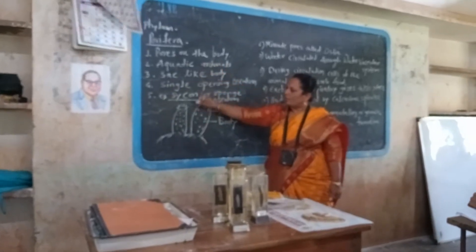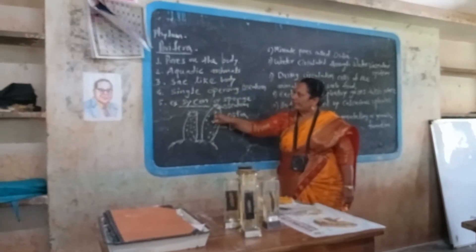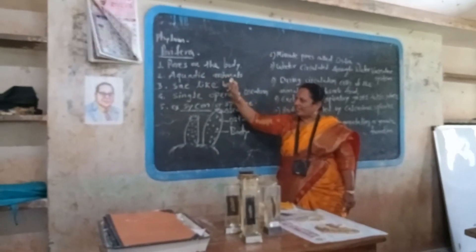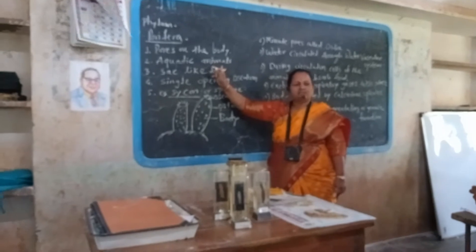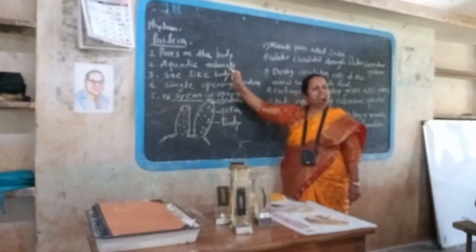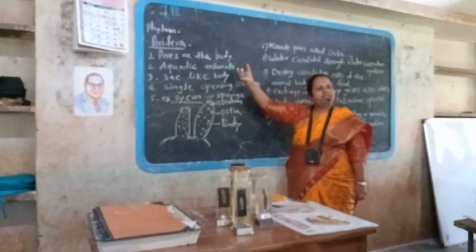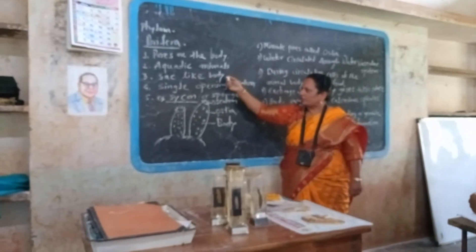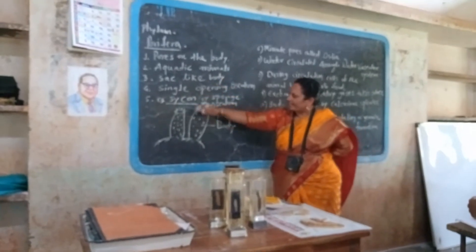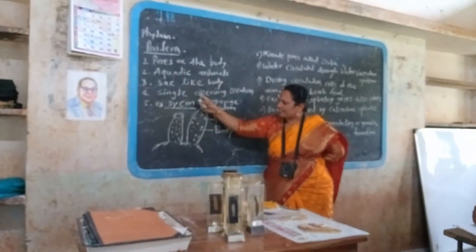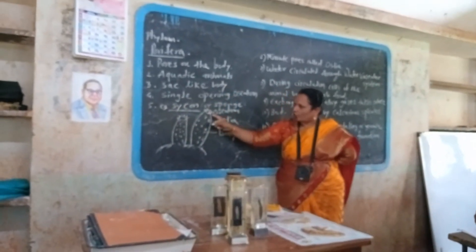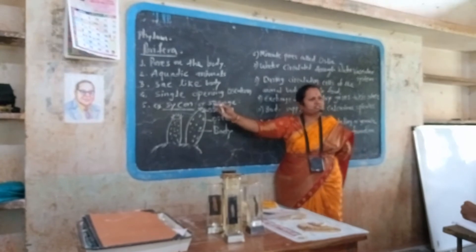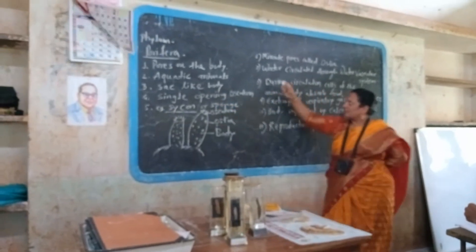First characteristic: pores on the body. These are aquatic animals, meaning they are mostly found in marine water or ocean water. They have a cyclic body with a single opening at the top called the osculum. Examples include sponge and cyclones.